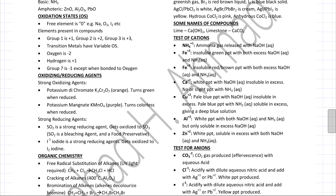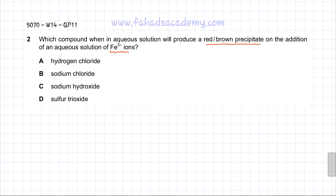Let's go back and look at the options. There's hydrogen chloride, sodium chloride (NaCl), and sodium hydroxide (NaOH). Sodium hydroxide is going to produce a red-brown precipitate.